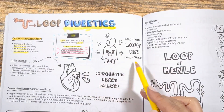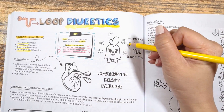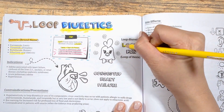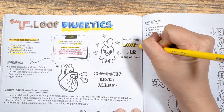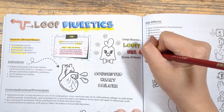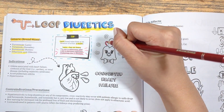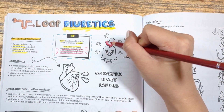The visual anchor for this class of drugs is the loopy hen. Why? Because these drugs work at the loop of Henle, and this hen is loopy or dizzy due to the fluid loss, which is a side effect of this medication.